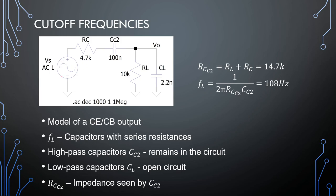I'm going to model the output of either a common emitter or common base amplifier as a voltage source, with our collector resistor as the output impedance connected to a load. We also have a high-frequency capacitor and a low-frequency capacitor, just like we would have at the output of an amplifier.